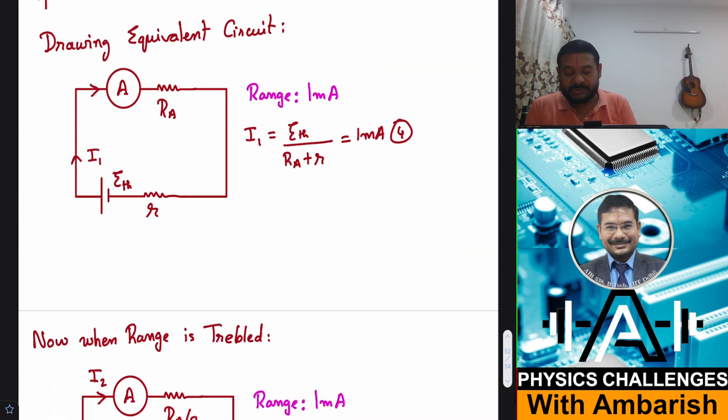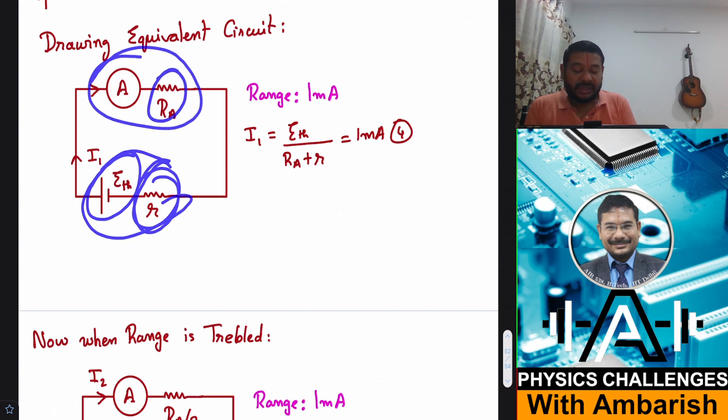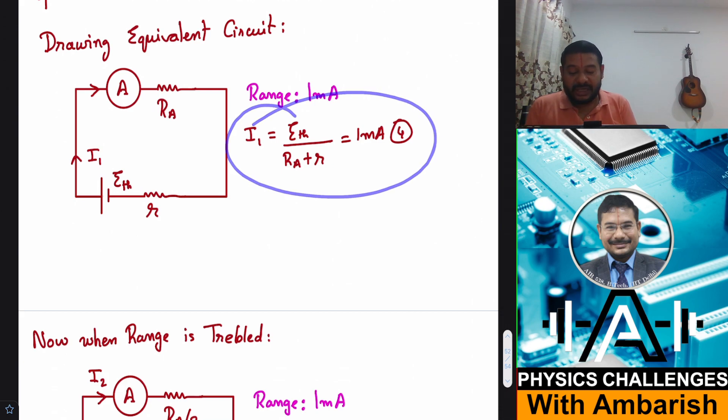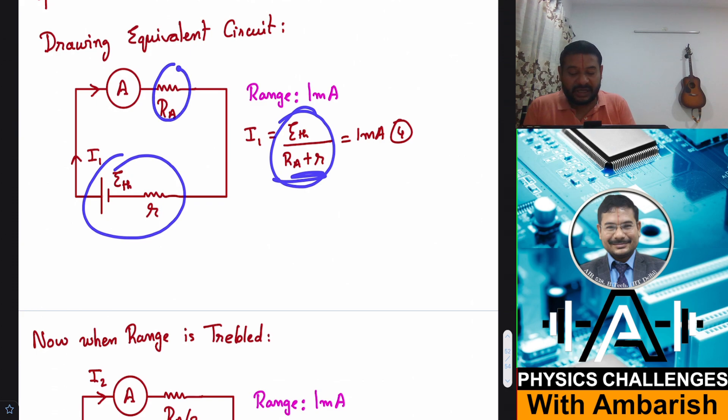So here's my circuit. Original circuit I have replaced by single battery of E_R and Thevenin resistance small r, and here is my ammeter with effective resistance RA. So what is the current in the first case? Current in the first case will be E_R divided by RA plus R, which is given as 1 milliampere.